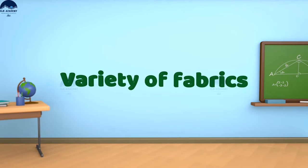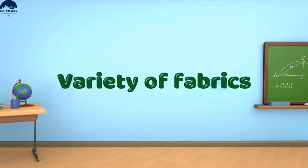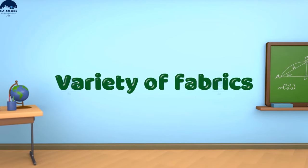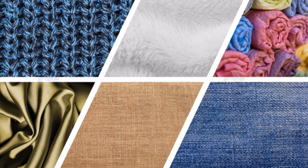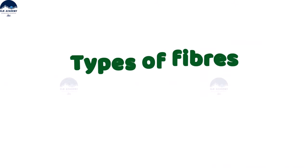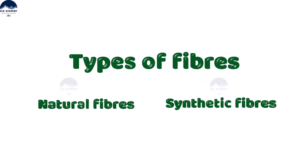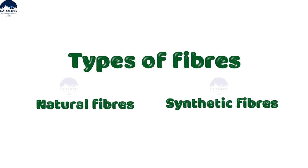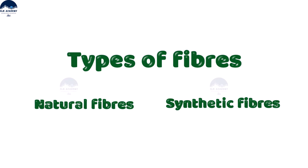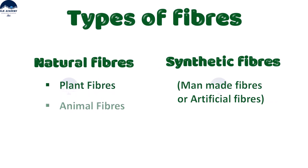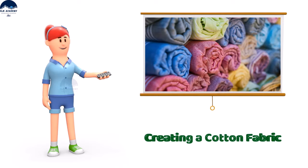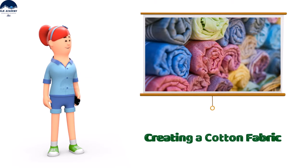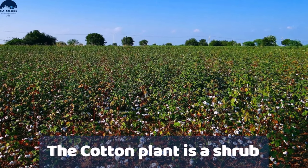Variety of fabrics: nowadays we are using a wide variety of fabrics. Types of fiber: there are mainly two types of fiber — natural fibers and synthetic fibers. Let us see the process of creating a cotton fabric.